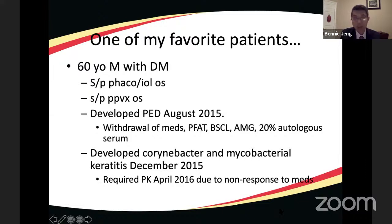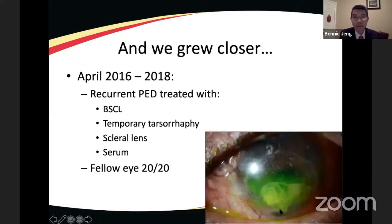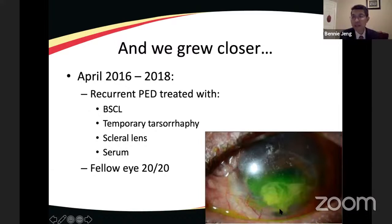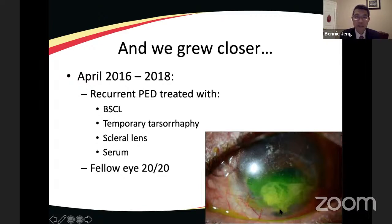He was referred for management of the epithelial defect. All standard treatment modalities were tried — preservative-free artificial tears, bandage soft contact lens, amniotic membrane, and autologous serum — but healing could not be achieved. Four months later he developed infectious keratitis with mycobacteria and Corynebacteria, eventually requiring penetrating keratoplasty due to non-responsiveness. Over the next two years they battled non-healing epithelial defects in the graft.